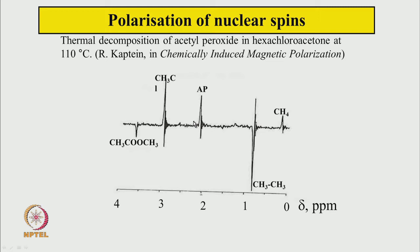Here is the NMR spectrum of a reacting system where acetyl peroxide reacts with a solvent. Peroxides break down when heated and undergo chemical reactions. The spectrum shows ethane and CH3Cl signals — some going up (absorptive) and some going down (emissive). The signal from one molecule comes in the absorptive sense and the signal from another molecule comes in the emissive sense.